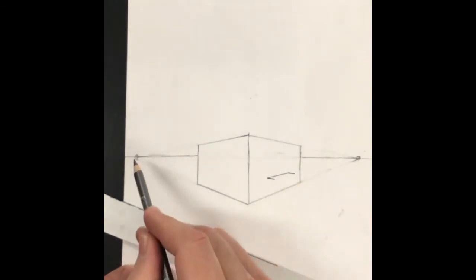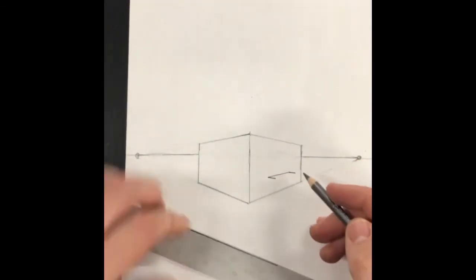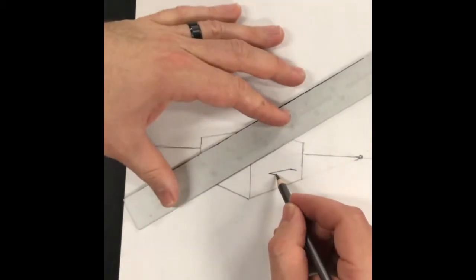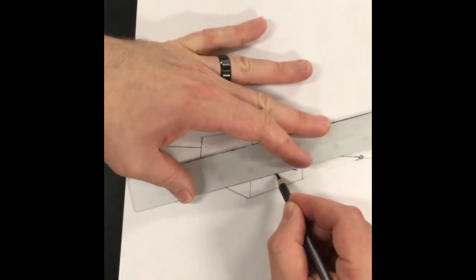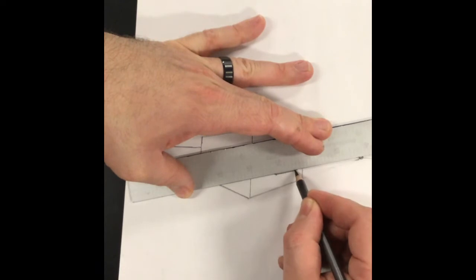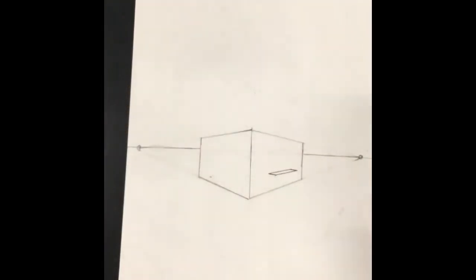Now I'm going to create the front of the top of my step by going from the front edge here and creating the top of the stair. It's almost like you're creating the top of a box without the sides.